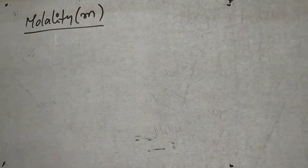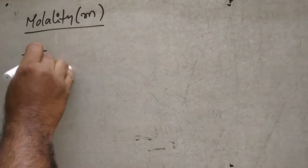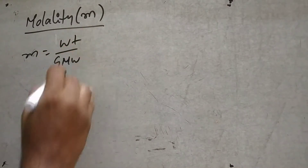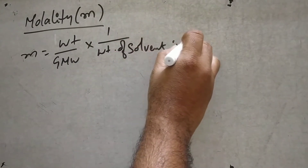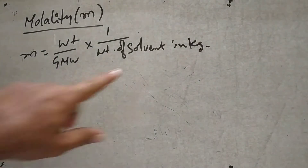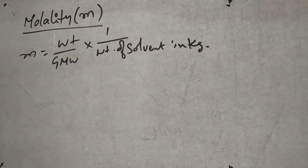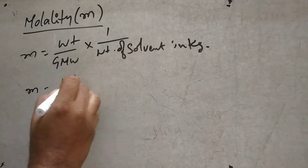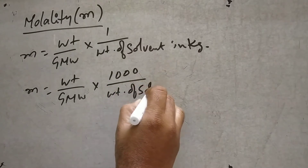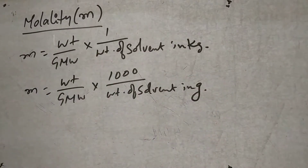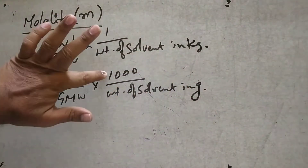So, what is the difference between molarity and molality? It is very simple. Molality is equal to the given weight divided by gram molecular weight. Molality equals moles into 1 divided by weight of solvent in kg. In grams: molality equals weight divided by gram molecular weight, into 1000 divided by weight of solvent in grams — that is 1000 grams.